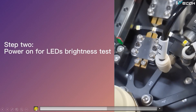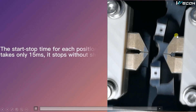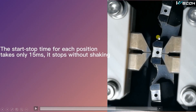Here is a different perspective — there are no LEDs, but we are showing you in slow motion how it works. For one LED, the brightness test takes only 15 milliseconds. This is how fast the machine works.